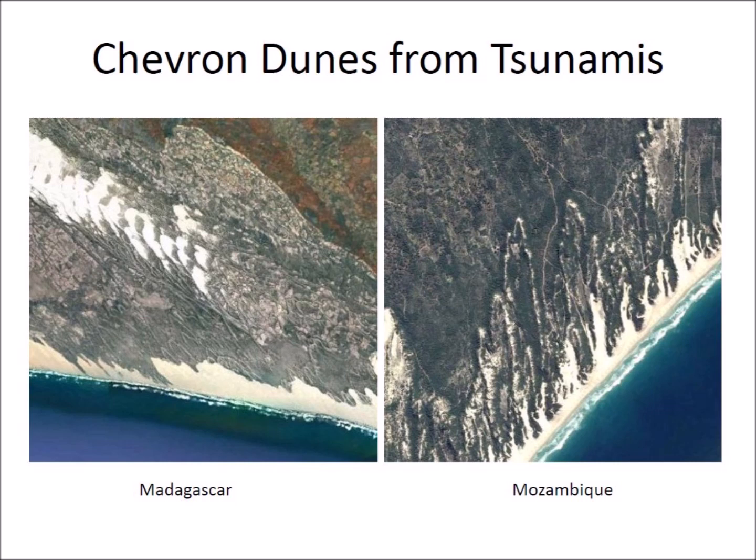Chevron dunes from tsunamis are found in many parts of the world. Here are some examples from Madagascar and Mozambique. The mechanism of formation is the same as illustrated for Big Bay and Kelly Bay — a wave of water dredges sandy material near the shore and carries it to higher terrain. When the water drains away, it leaves sandy deposits with the typical scallop or chevron shapes.